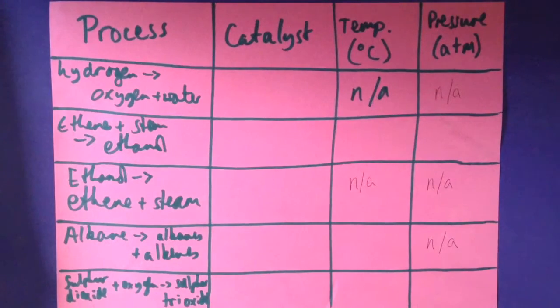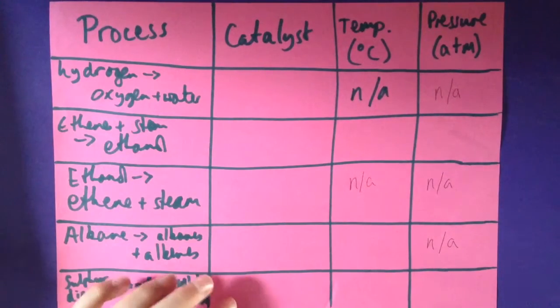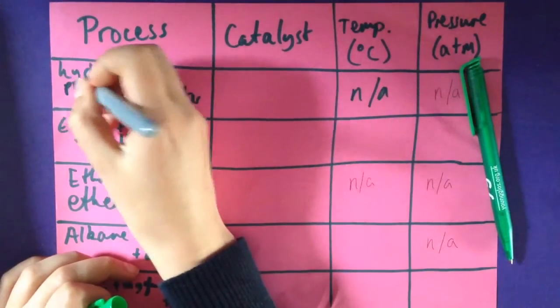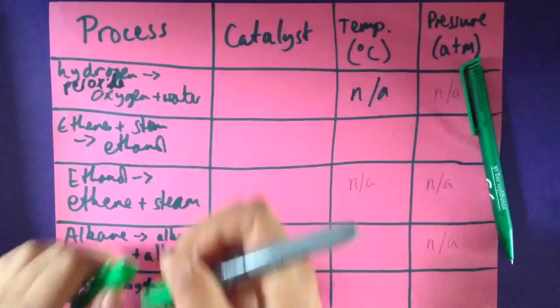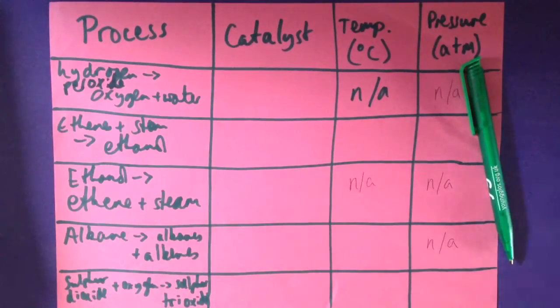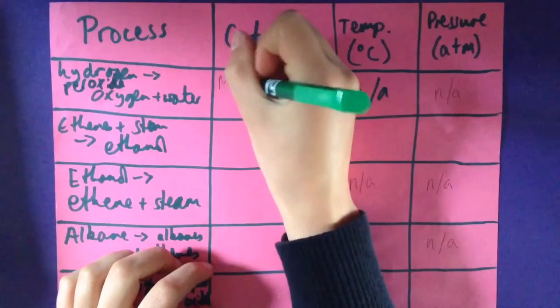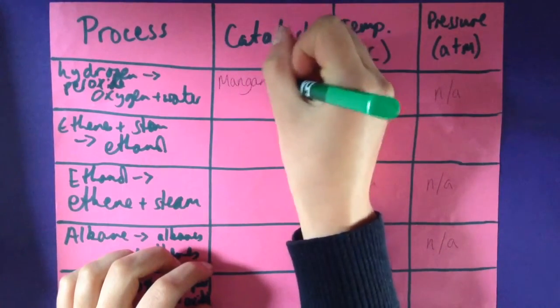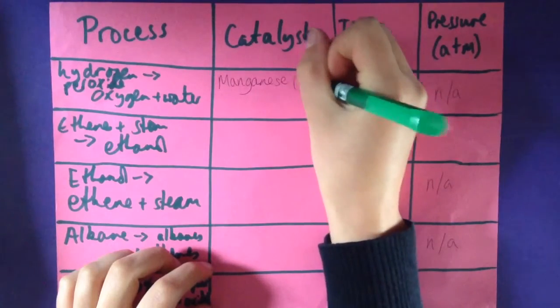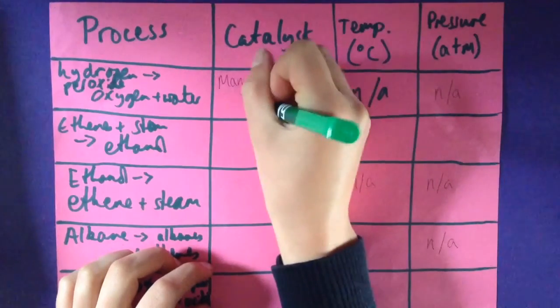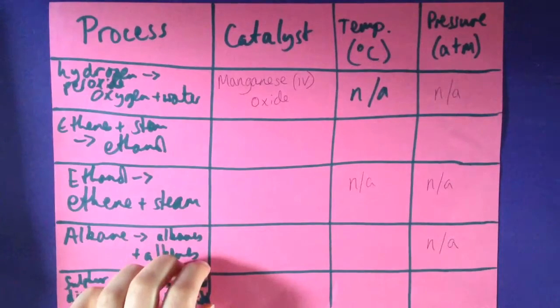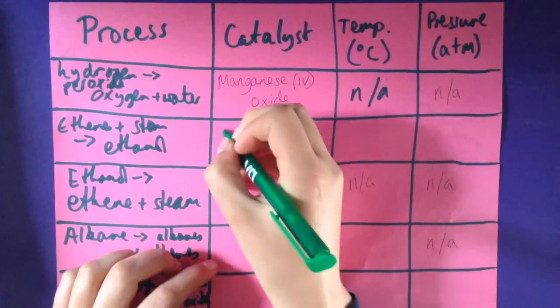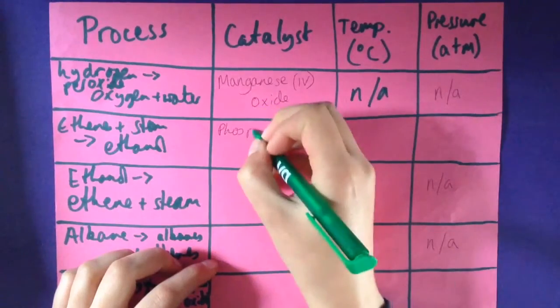So the catalyst for hydrogen peroxide decomposing into oxygen and water is manganese IV oxide. The catalyst for ethene and steam combining to make ethanol is phosphoric acid.